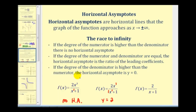If the degree of the denominator is higher than the degree of the numerator, the horizontal asymptote will be y equals zero. So with numerator degree zero and denominator degree one, as x increases without bound, the numerator stays at two while the denominator increases without bound, therefore the function value approaches zero. So y equals zero is the horizontal asymptote.